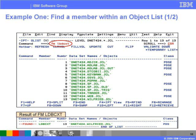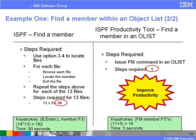The next set of slides will take you through 10 examples that show how ISPF Productivity Tool can improve your productivity. In the first example, you want to find the member LDBCXT in any of your JCL libraries. The command OLD NET424.*.JCL will list all of your JCL libraries in an object list, as shown in the slide. The FindMEM command, abbreviated FM, will locate the member as shown at the bottom of the slide. Using ISPF, you might need to perform up to 39 steps to locate a member within 13 files, but with ISPF Productivity Tool, using the single FindMEM command, this task requires only one step.